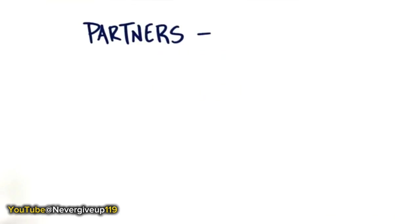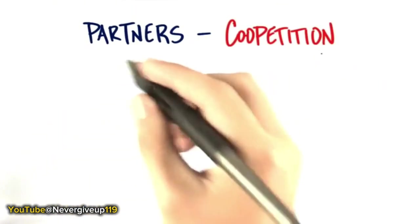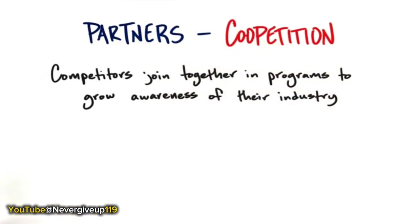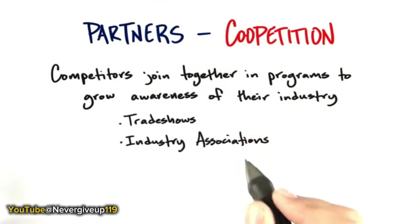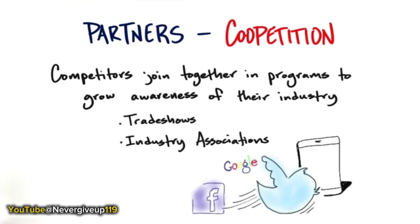The next type of partnership is the most unlikely on face value — it's when competitors get together in programs to do something jointly for their industry, such as trade shows and industry associations. The Automobile Industry Action Group has 900 members of competitors, all vying to sell the same products to the auto industry. Fashion Week in New York is another example — all the high-end fashion suppliers get together and actually work together to promote a joint view of the industry.